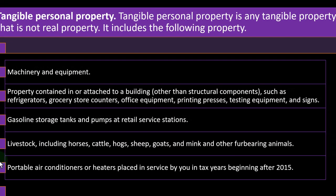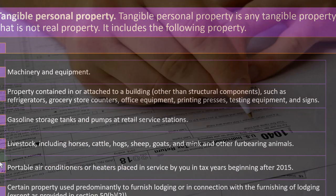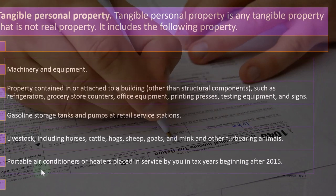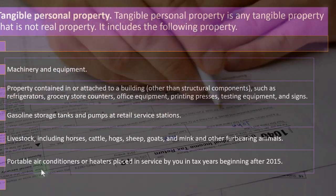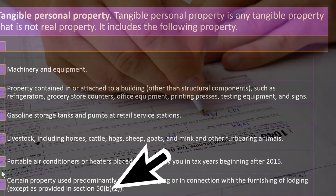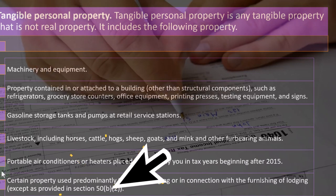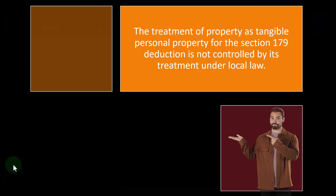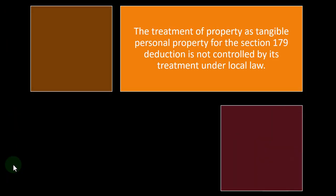Portable air conditioners or heaters placed in service in tax years beginning after 2015 — that one gets a little messy regarding whether they're part of the building or are portable. Certain property used predominantly to furnish lodging or in connection with the furnishing of lodging, except as provided in Section 50(b)(2). The treatment of property as tangible personal property for the Section 179 deduction is not controlled by its treatment under local law.